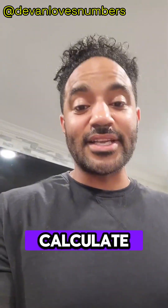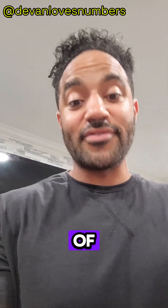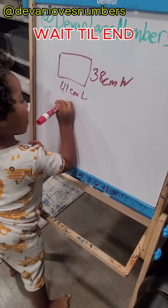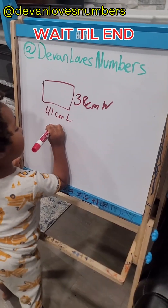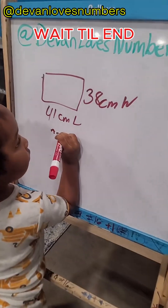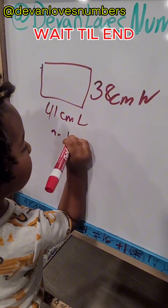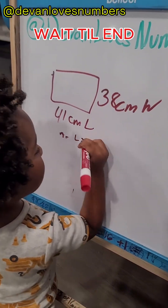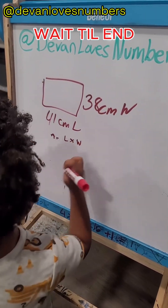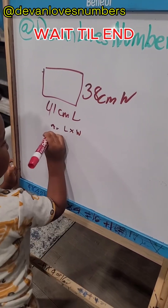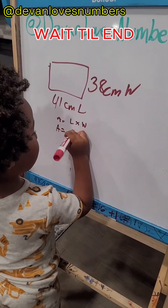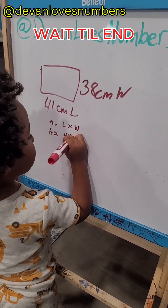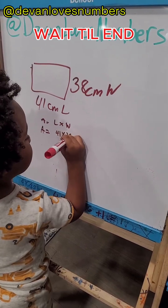So my two-year-old son is going to show me how to calculate the area of a rectangle. Area equals width times width. Area equals 41 times 38.